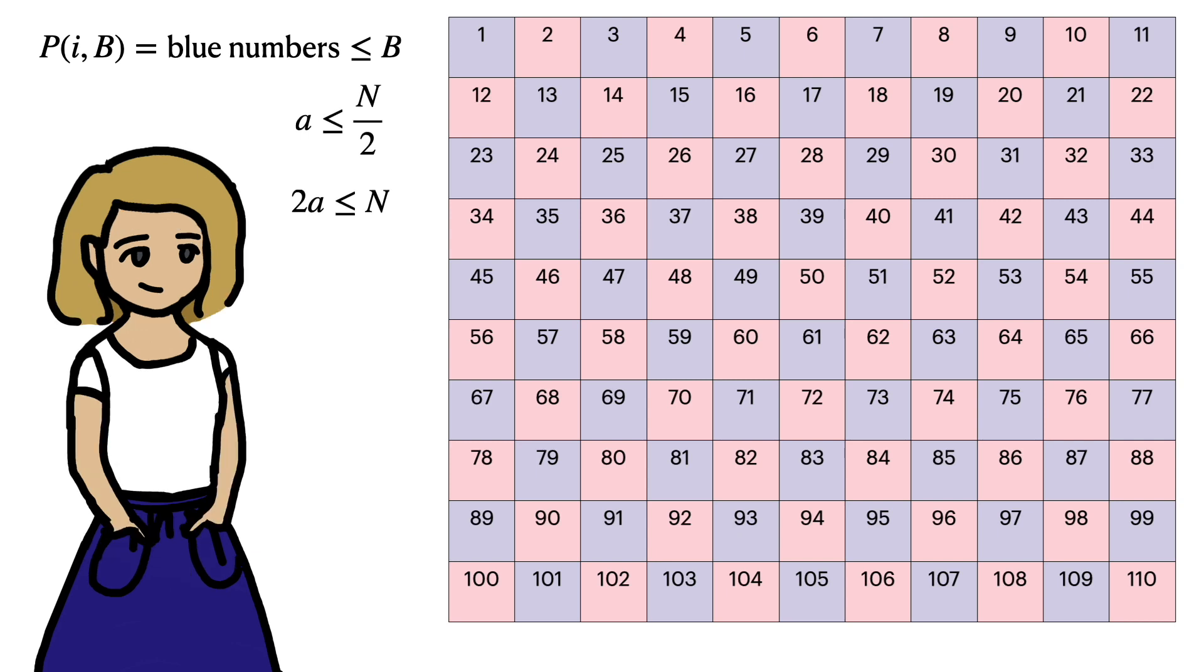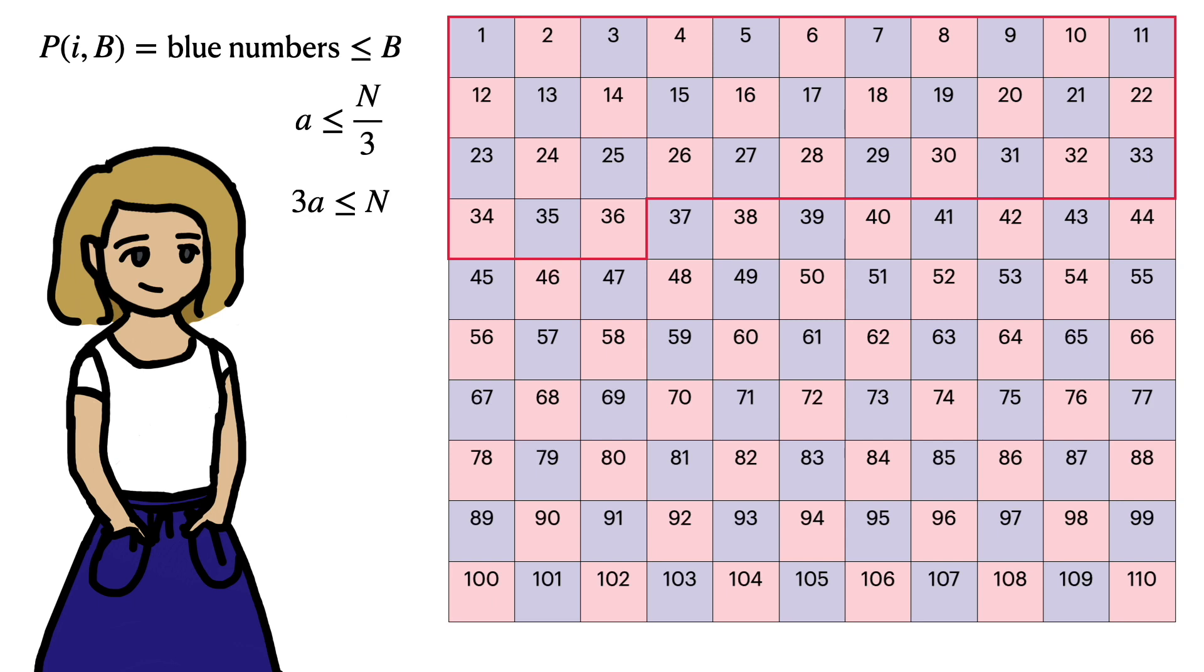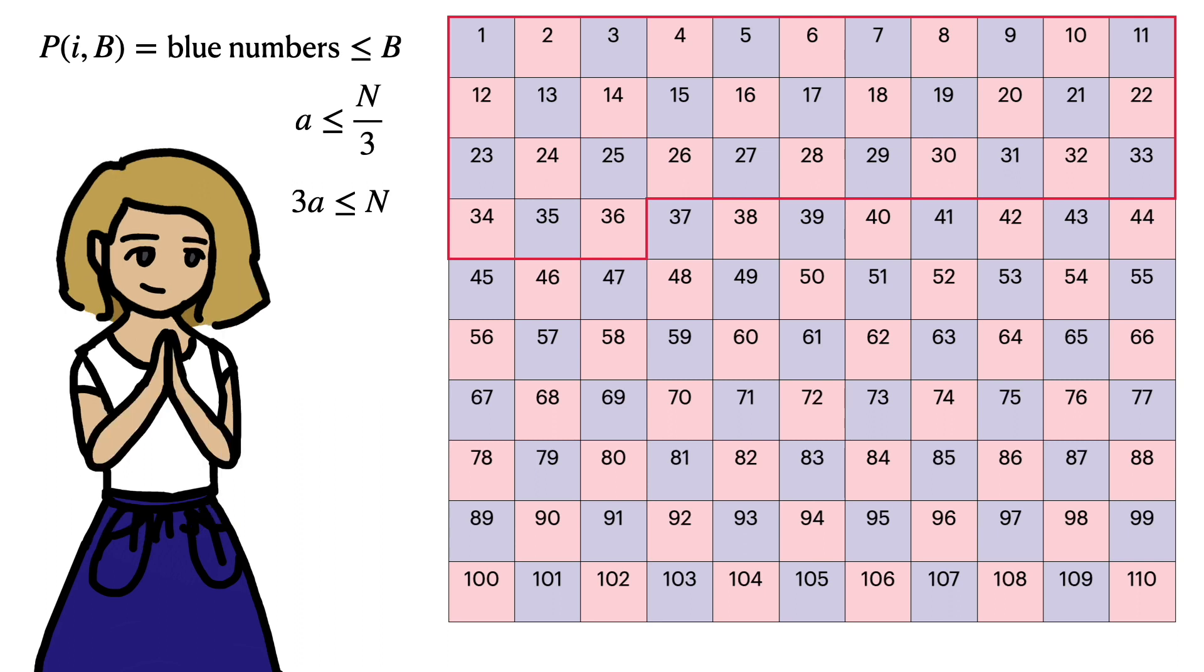Now onto the second iteration. We'll look at a below n/3 this time, so that 3a is less than or equal to n. Now we'll remove instances of 3a soon. But remember, we only want to remove each composite number once. That is, we only want to remove instances of 3a that are currently blue.